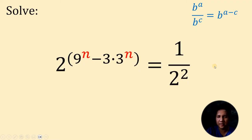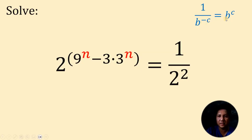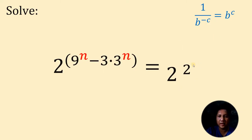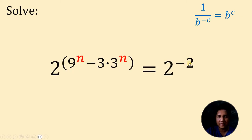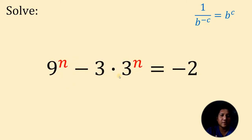Now, how about the right-hand side? Take note that when we have 1 over b raised to negative c, it is equivalent to b raised to the power of c. Now if we have 1 over b raised to c, it is equivalent to b raised to negative c, or vice versa. So the right-hand side can be written as 2 raised to negative 2. Now at this point, take note that we have 2 equal expressions and 2 equal bases. Therefore, we can say that their exponents must be the same. So we have 9 raised to n minus 3 times 3 raised to n equals negative 2.